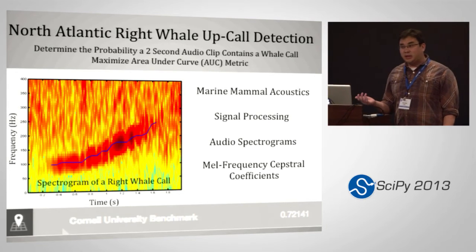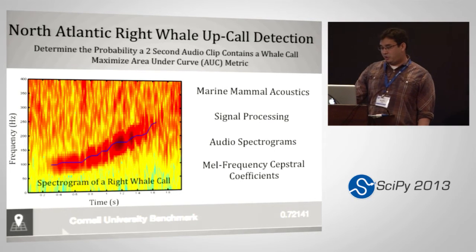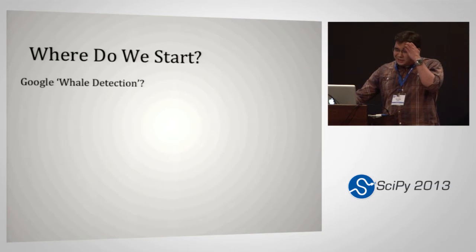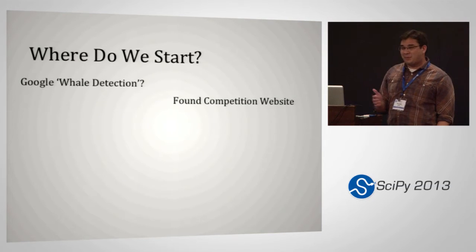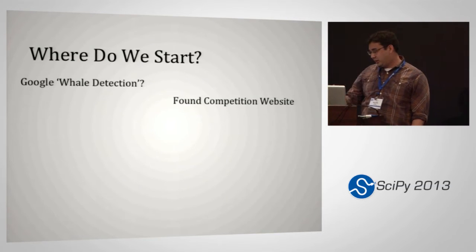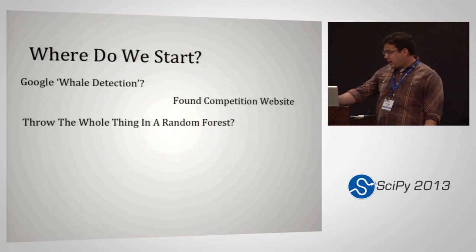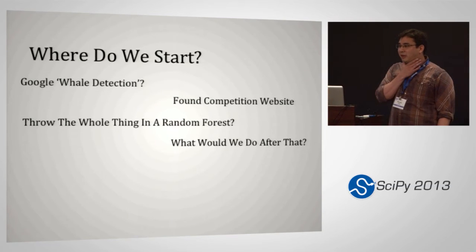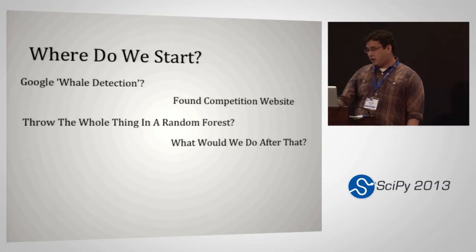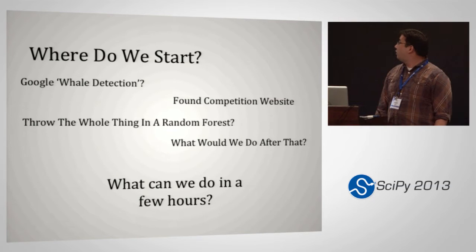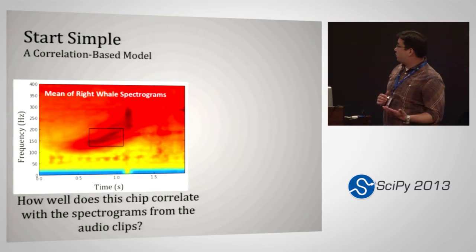This sounded like a really cool problem because I'd never worked with whale data before. Where do you start? Googling 'whale detection' just leads back to the competition website, and papers are behind paywalls. You could throw everything into a random forest, which some people did, but what would you do after that? You might pick out some important frequencies but that's not really a model. I wanted to know what we could do in just a few hours, so I started with a correlation-based model.